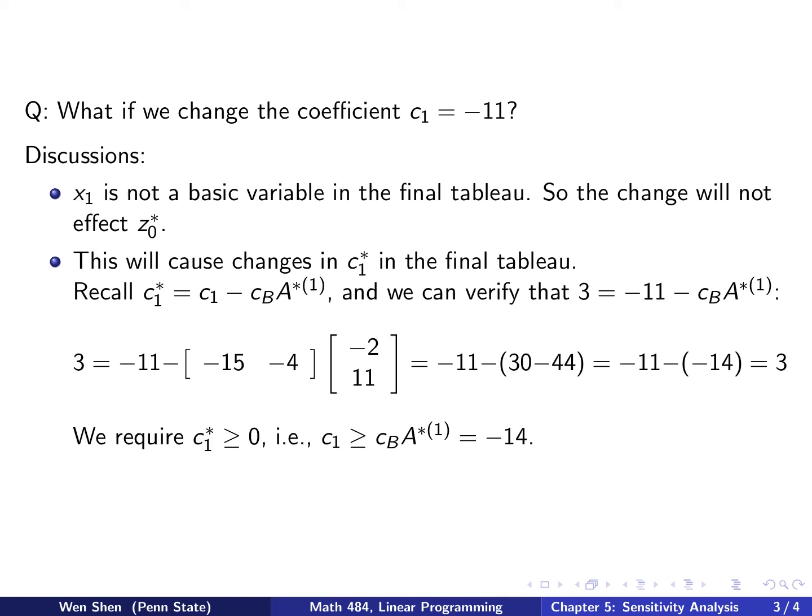To keep the final tableau still optimal, we must require the coefficient c1 star to be non-negative. What does it mean in here? We want this to be non-negative, that is, we have the constraint that c1 shall be bigger than cB A star first column, and so this quantity we computed here, so it's negative 14. Basically, we need c1 to be bigger than negative 14 to ensure that c1 star is positive.